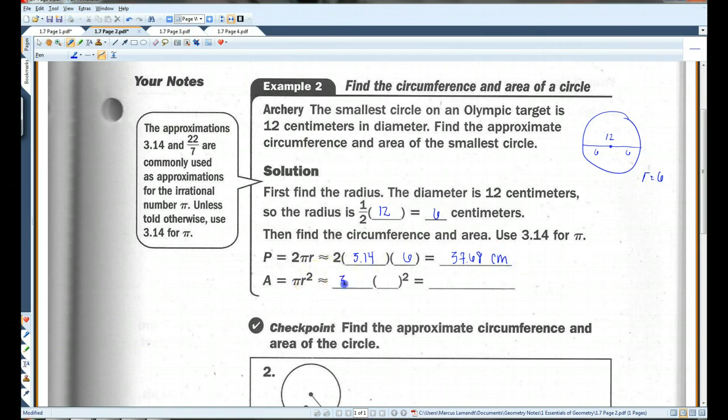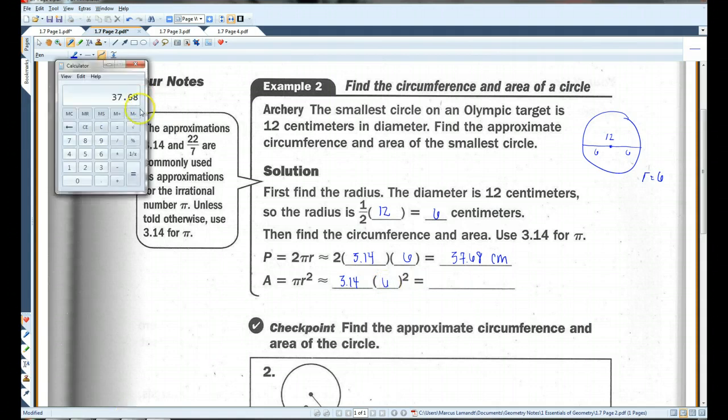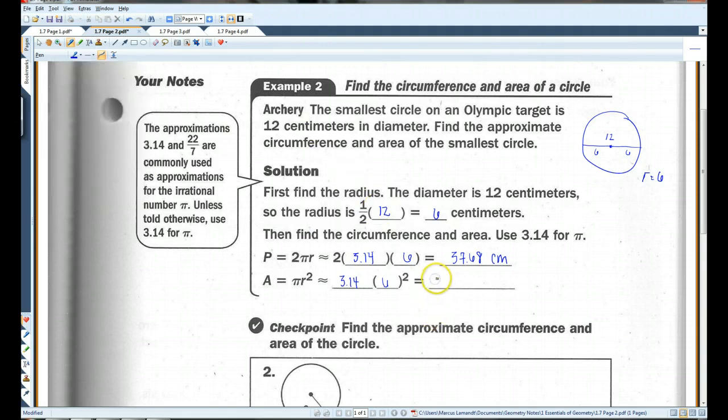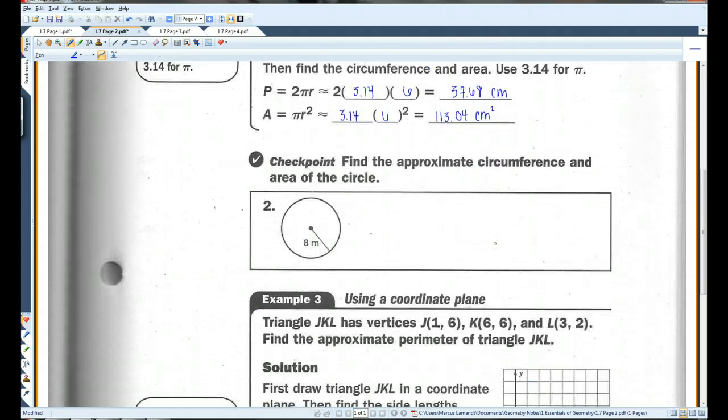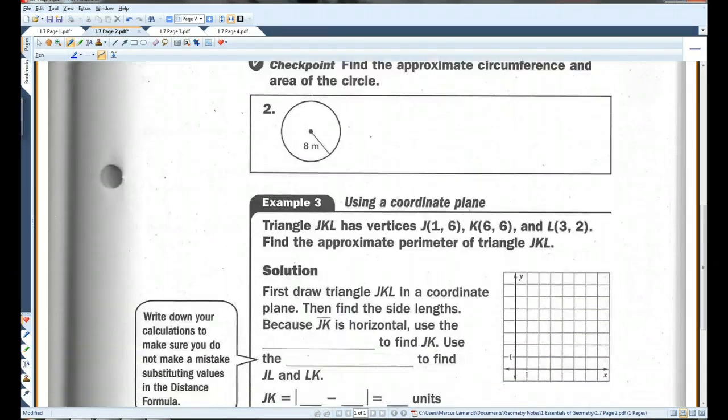The area is 3.14 times 6 squared. So, we can pull out the calculator. 3.14 times 6 times 6, 113.04. And this is centimeters squared. Make sure that the area is squared and the perimeter is just regular centimeters. Alright, you guys can do this one on your own. Make sure you're doing these checkpoints.